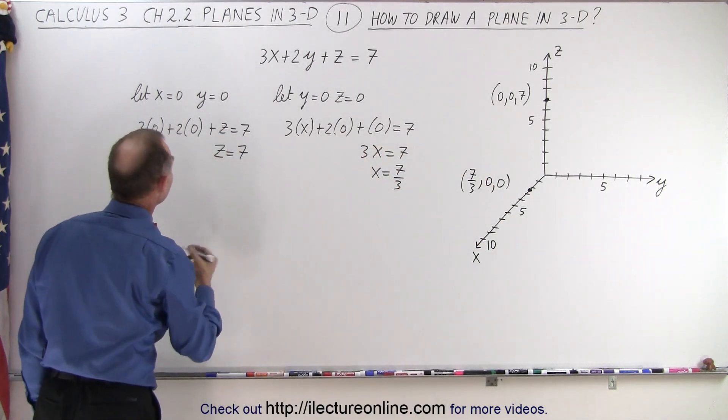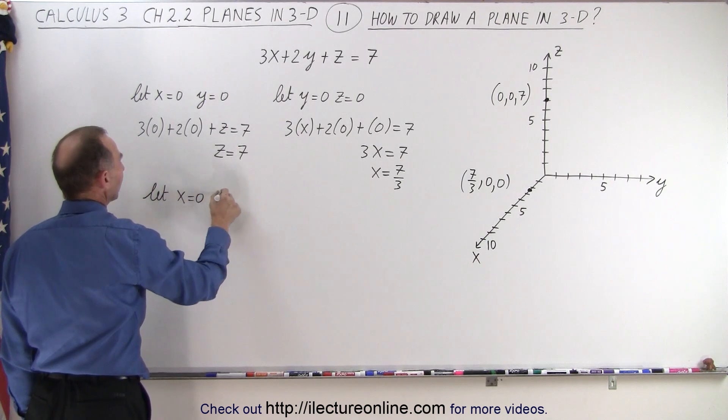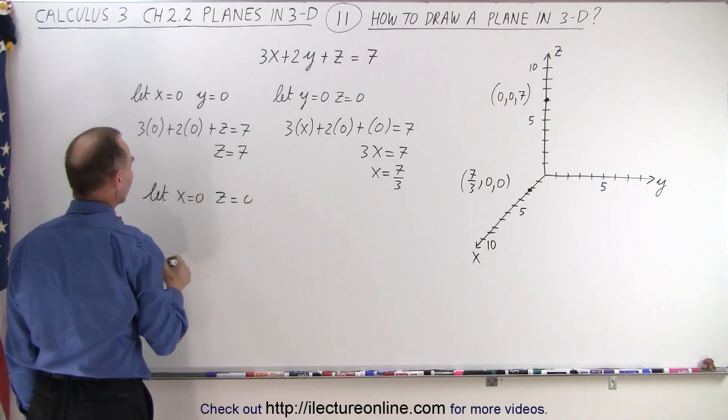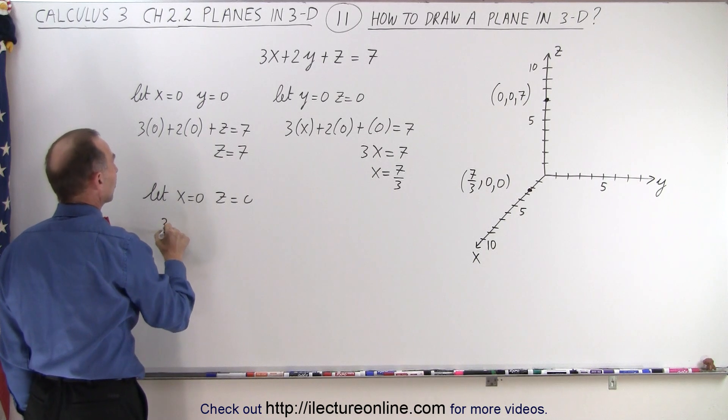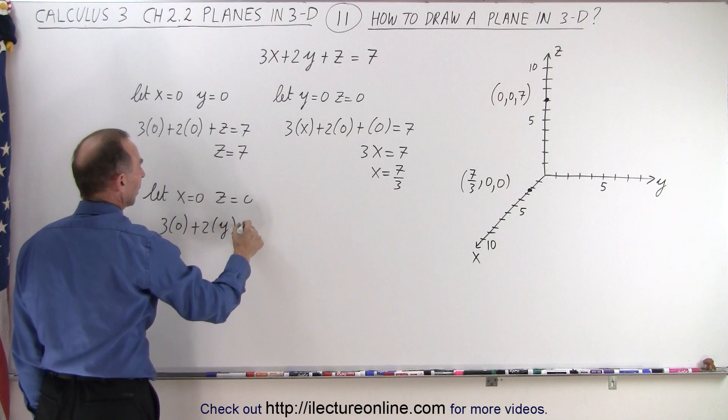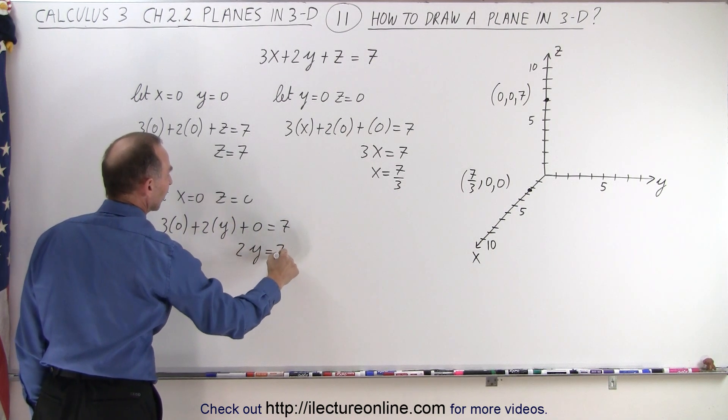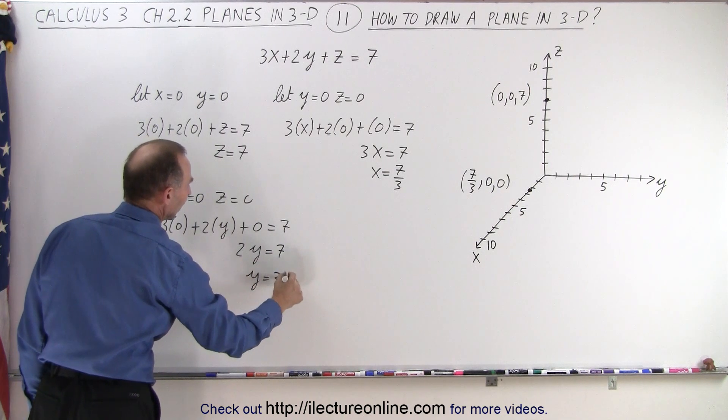Okay, now we do it again. We're going to let x equals zero and z equals zero. So there's three possible combinations. So when we do that, we get 3 times zero plus 2 times y plus zero equals seven, or 2y is equal to seven, or y is equal to 3.5.